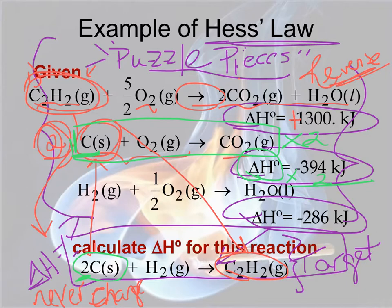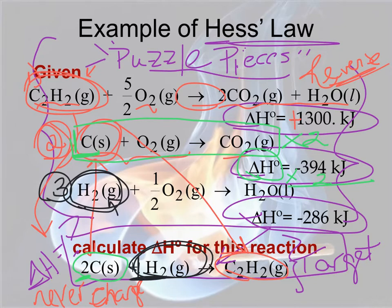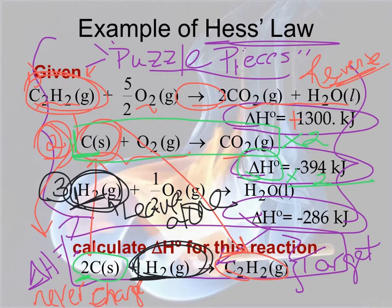For the last puzzle piece reaction, I'll look for hydrogen. It's a reactant in the given reaction and also a reactant in the target reaction, so we do not have to reverse the third reaction. There is one diatomic hydrogen molecule in both the puzzle piece and the target reaction, so the quantities are correct too. We leave the third puzzle piece reaction completely alone — it has the correct quantities and things are on the correct side of the arrow.